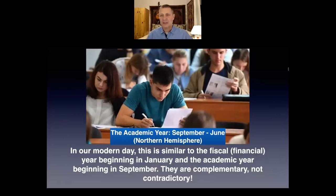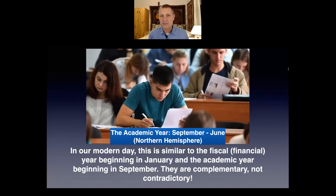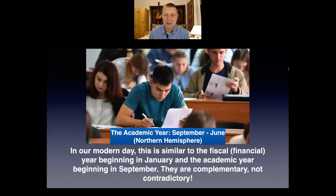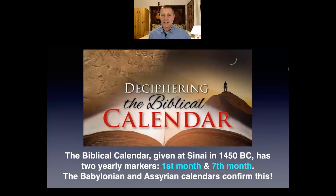This is very similar to what we see in modern day society. We have both a fiscal financial year beginning in January in many cultures around the world, and an academic year beginning in September. In many nations, especially in the Northern Hemisphere, the academic year begins in August or September and goes to May or June. This is not in contradiction to the regular Gregorian fiscal year beginning in January and ending in December — they run in parallel. It's just the same concept of having two parallel ways of counting years, or two different systems, within the same yearly cycle.